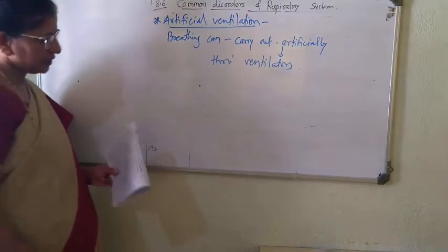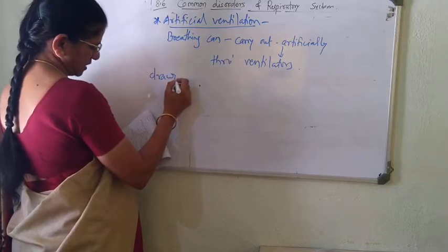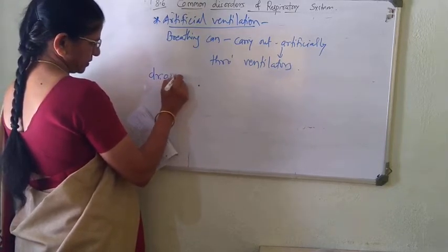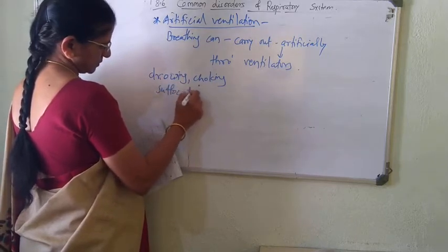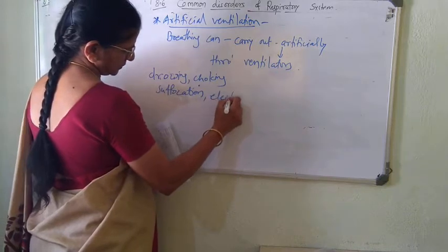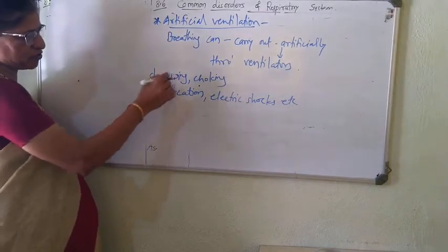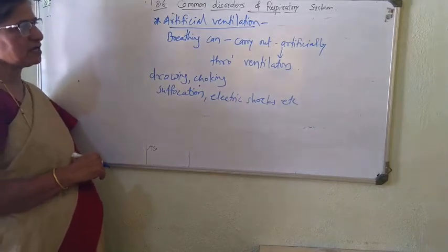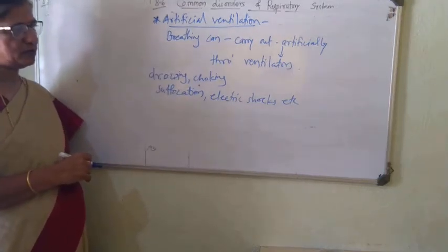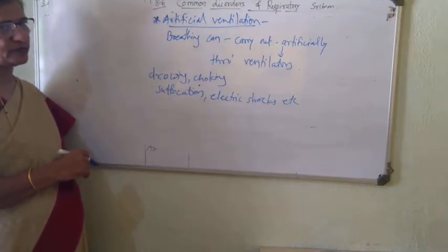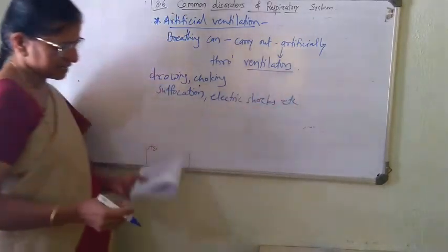Artificial ventilation is used when breathing stops due to drowning, choking, suffocation, or electric shock. In such cases, patients are put on ventilators, and breathing is carried out through the artificial machine. That machine is called a ventilator.